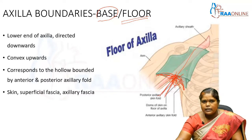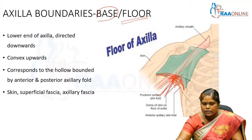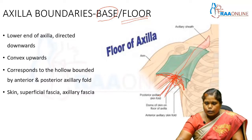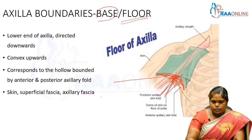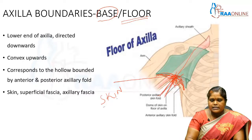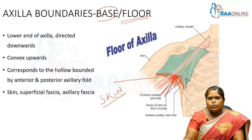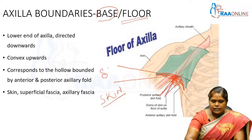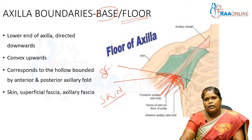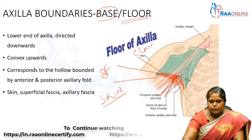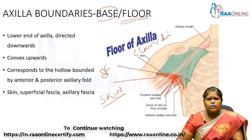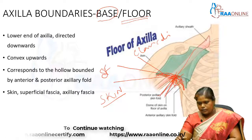The base is convex upwards, which corresponds to the hollow bounded by the anterior and posterior axillary folds. This floor is formed from superficial to deep by three structures: the superficial-most structure is the skin; if we remove the skin, the next layer is the superficial fascia; and deep to this will be the axillary fascia. This is about the base of the axilla.